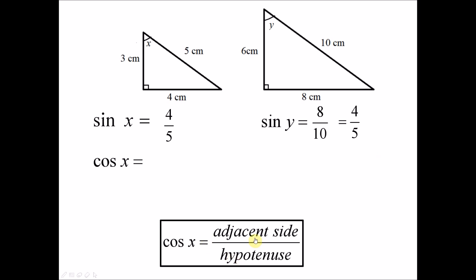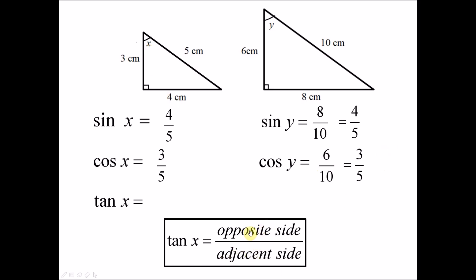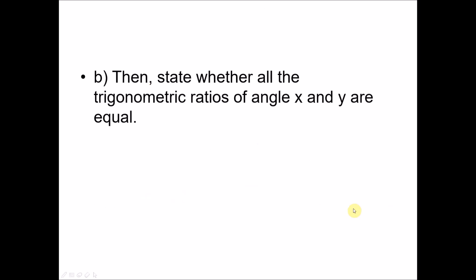Cosine X equals adjacent over hypotenuse = 3 over 5. Cosine Y equals 6 over 10, which simplifies to 3 over 5. Tangent X equals opposite over adjacent = 4 over 3. Tangent Y equals 8 over 6, which simplifies to 4 over 3. So all trigonometric ratios of angle X and angle Y are equal.